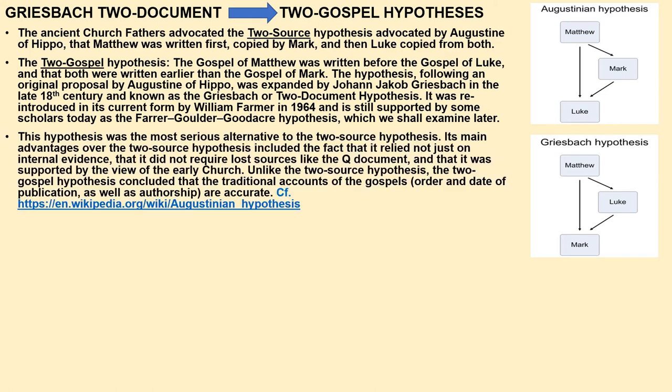This hypothesis was the most serious alternative to the two-source hypothesis. Its main advantages included relying not just on internal evidence, not requiring lost sources like a Q document, and being supported by the view of the early church. Unlike the two-source hypothesis, the two-gospel hypothesis concluded that traditional accounts of gospel order, date, and authorship given by Augustine are accurate. There's a well-written article on Wikipedia called 'The Augustinian Hypothesis.'